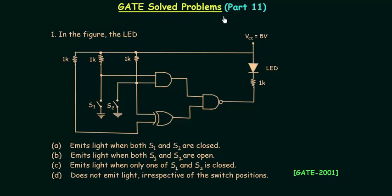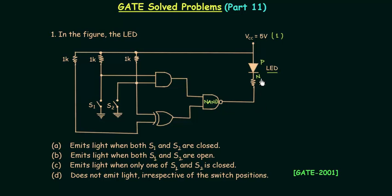Welcome to this part of GATE solved problems. In the first problem, you can see the given figure — we have one LED (light emitting diode) in which the P side of the diode is connected to VCC. VCC is equal to 5 volts, so the P side is connected to high potential, which is 1 in digital electronics. The N side of the diode is connected to the output of this 2-input NAND gate.